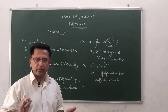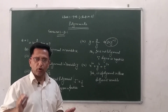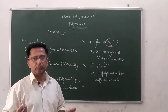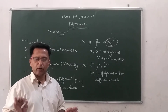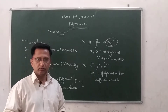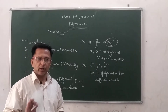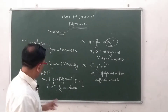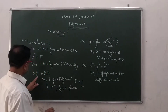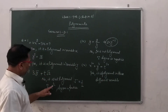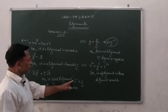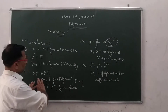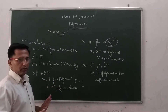The exponent is always a whole number — no negative, no fraction. That is the definition of a polynomial. Here the value of the exponent is 1 by 2, because the value of root is 1 by 2. Therefore it is not a polynomial.